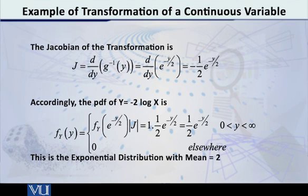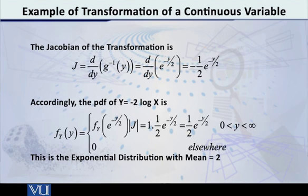So this is the answer. We have obtained the density of the transformed variable y. f(y) = ½ e^(-y/2), over the interval y from 0 to infinity. Many of you will recognize this — this is the PDF of the exponential distribution where the mean equals 2.